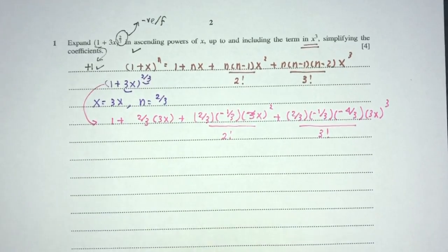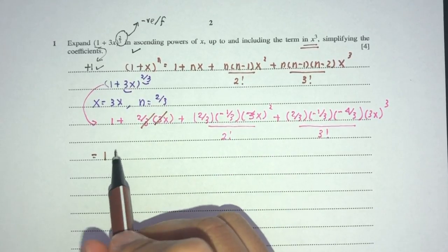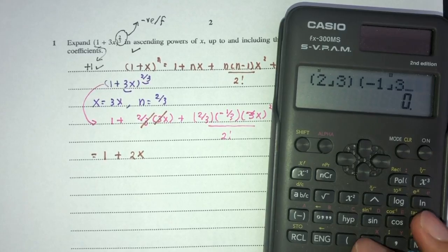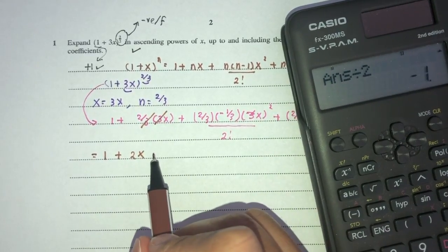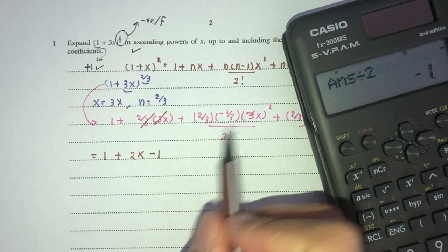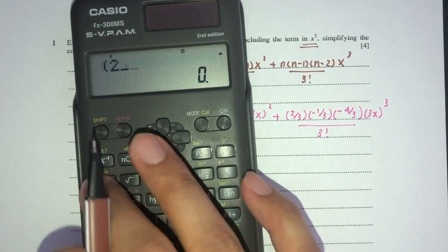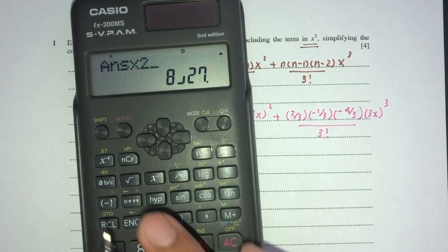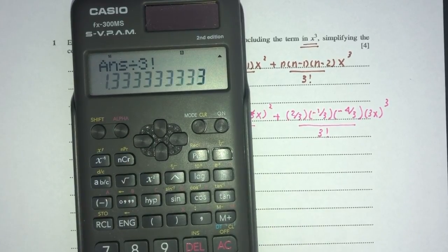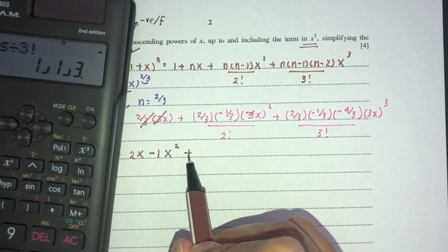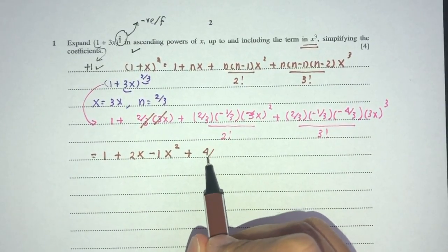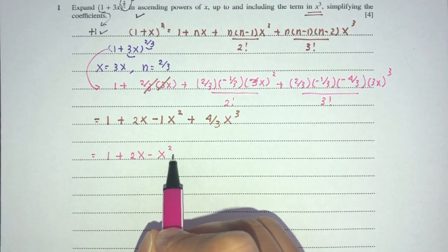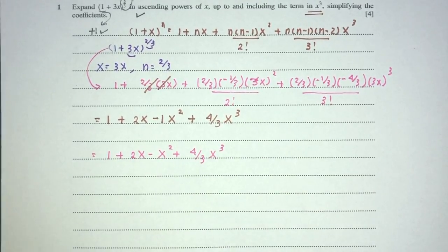Now simplify and see what happens. The 1 stays as 1. This becomes 2x. Then (2/3)(−1/3)(9)/2 gives minus 1, so the x² term is −x². Finally, (2/3)(−1/3)(−4/3)(27)/6 gives 4/3, so the x³ term is (4/3)x³. So the answer for question part 1 is 1 + 2x − x² + (4/3)x³.